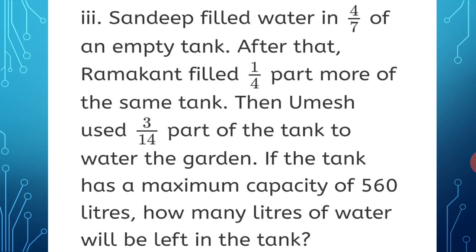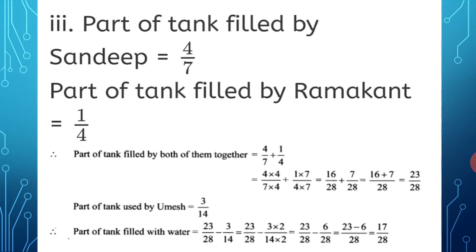Part filled by Sandeep = 4 upon 7. Part filled by Ramakanth = 1 upon 4. Total part filled by both = 4 upon 7 plus 1 upon 4. Denominators are different, so equalize: 4 upon 7 × 4 = 16 upon 28, and 1 upon 4 × 7 = 7 upon 28. 16 + 7 = 23 upon 28.